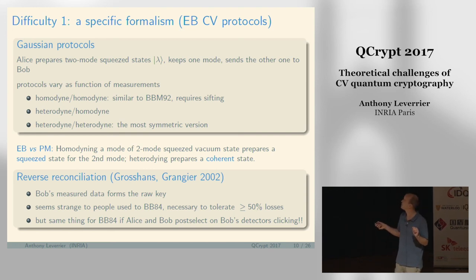The simplest Gaussian protocols: Alice prepares a two-mode squeezed state. These states play the same role as the EPR pair for qubits. She prepares a bunch of those, keeps one mode, sends the other mode to Bob, and then they both measure their optical modes.